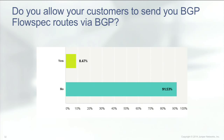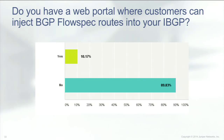For those who do have it enabled, the next question was: do you allow your customers to send you BGP flow spec routes via BGP? Almost everybody said no. Apparently it scares people to allow customers to send them flow spec routes, although many allow customers to send destination black hole routes — I find that an interesting dynamic. The next question was: do you have a web portal where customers can log in and inject BGP flow spec routes through some sort of web tool? Almost 90% said no. That either speaks to a lack of trust that customers might do something they shouldn't, or simply a lack of time to develop such a tool.